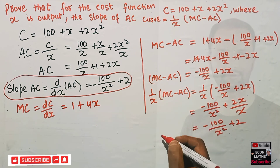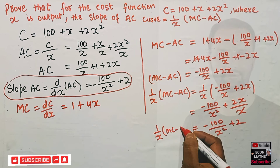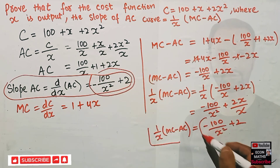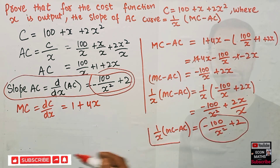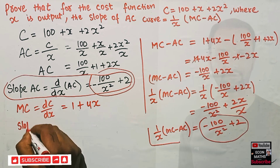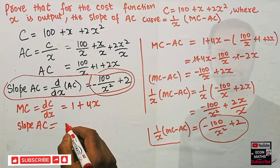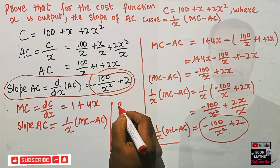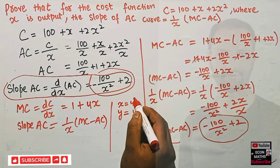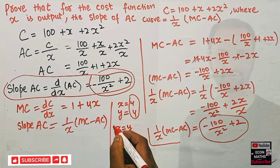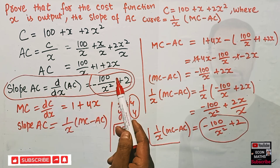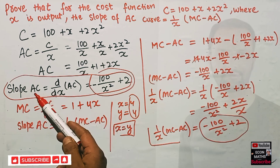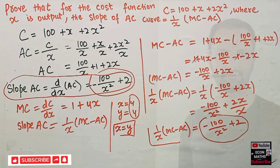We can see that the slope of average cost equals −100/x² + 2, and (1/x)(MC − AC) also equals −100/x² + 2. Since both right-hand sides are the same, we can equate the left-hand sides. Therefore, slope of AC = (1/x)(MC − AC), which is what we needed to prove.